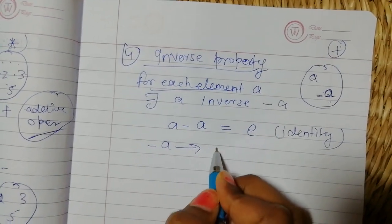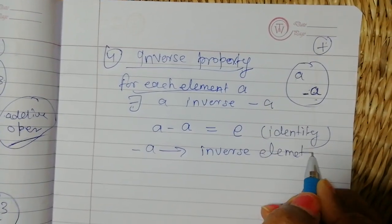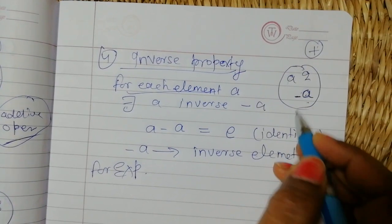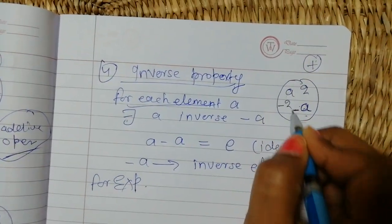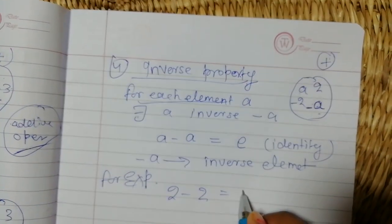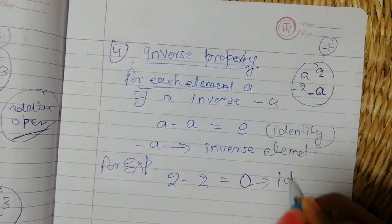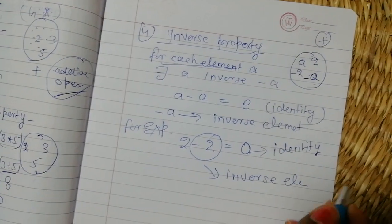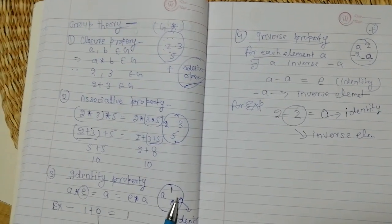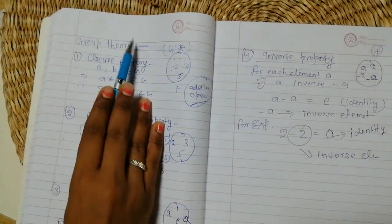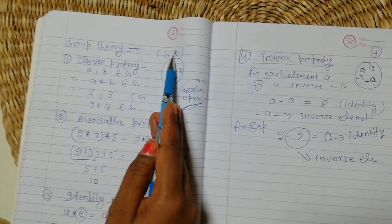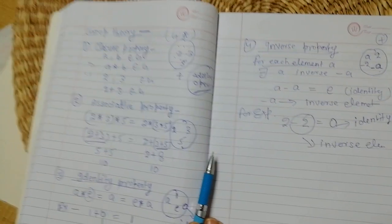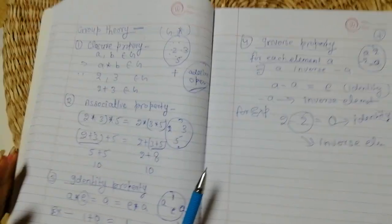For example, if the group contains two, then it must also contain minus two. When we operate two plus minus two, we get zero, which is the identity. So minus two is called the inverse element. So students, these are the properties of group theory: a group is a set with an operation satisfying four properties — closure, associative, identity, and inverse. Thank you, bye.